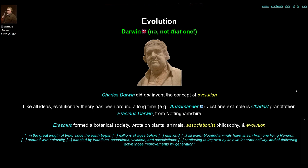Erasmus Darwin had his own theories on evolution, maybe not as developed as Charles's, but he certainly had his own theories. The point of this slide is to show you that the concept of evolution was not invented by Charles Darwin. Like all ideas, evolutionary theory has been around for a long time. You can find evolutionary theories in Greek writing, in the ancient Greeks and Anaximander, for example.